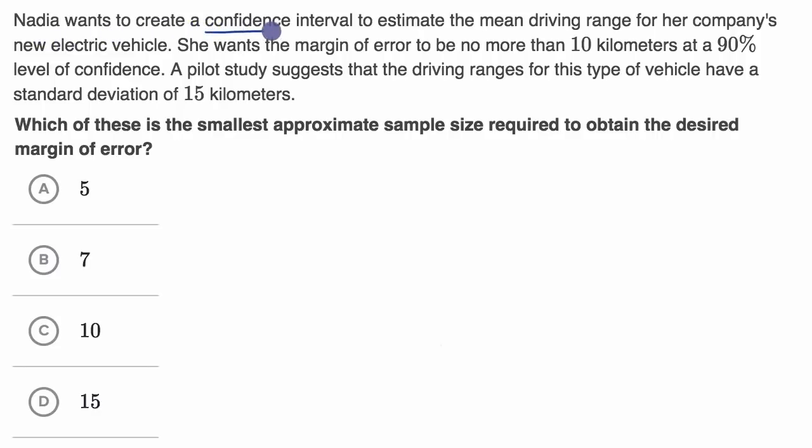Nadia wants to create a confidence interval to estimate the mean driving range for her company's new electric vehicle. She wants the margin of error to be no more than 10 kilometers at a 90% level of confidence. A pilot study suggests that the driving ranges for this type of vehicle have a standard deviation of 15 kilometers. Which of these is the smallest approximate sample size required to obtain the desired margin of error?